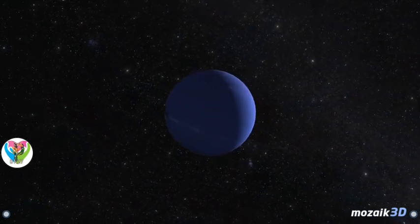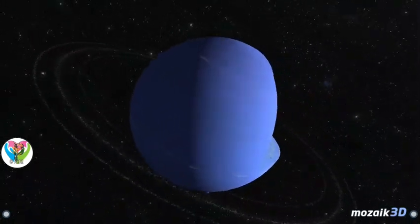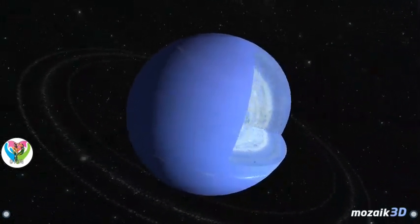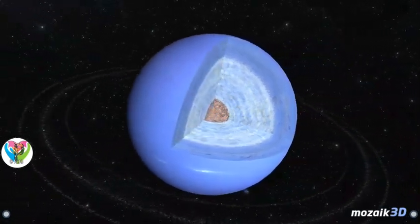Its surface is bright blue with cloudy white spots of methane. Its color comes from the 2% methane content of the atmosphere, which absorbs red light and reflects blue.